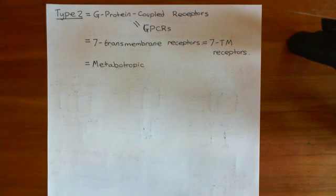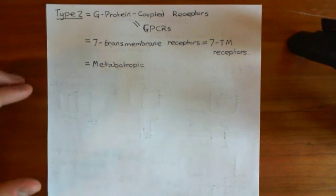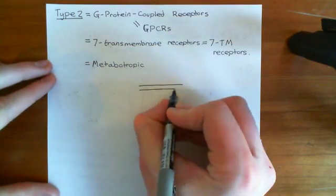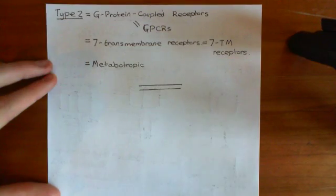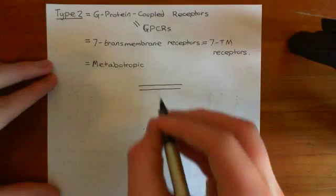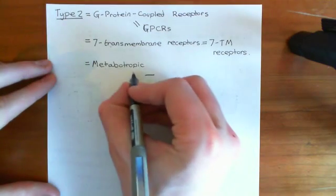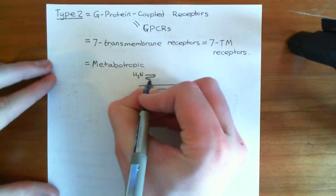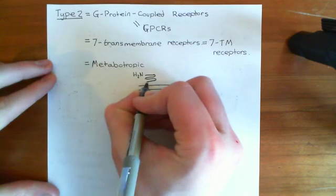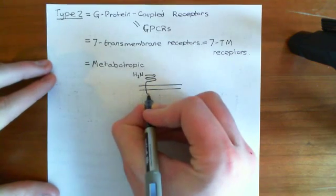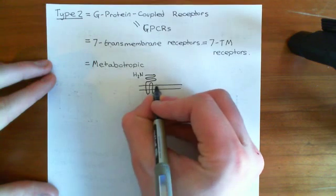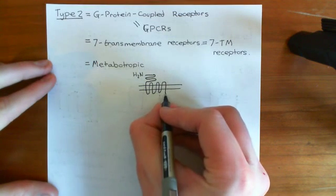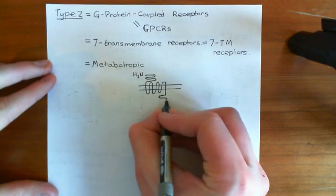Let's have a look at the basic structure of a G-protein-coupled receptor. If this is the plasma membrane, then the basic membrane-spanning topology is that you have the amino terminus extracellularly, then some sort of extracellular domain. Then you have the seven membrane-spanning alpha helices — one, two, three, four, five, six, seven — and then some sort of intracellular domain.